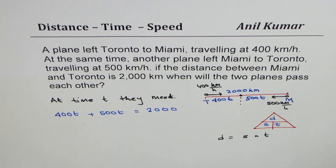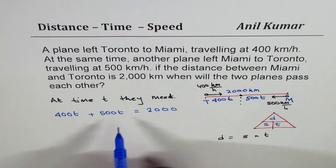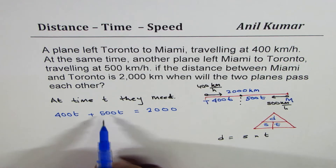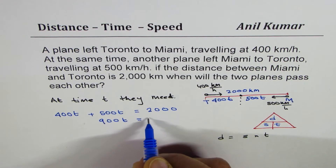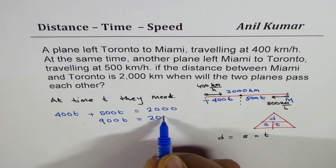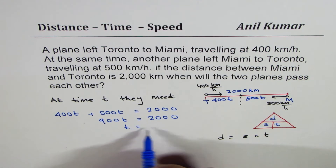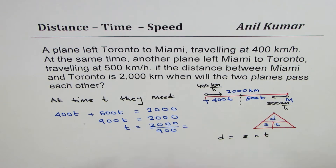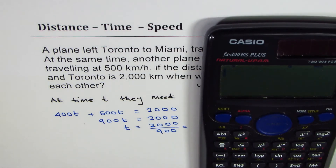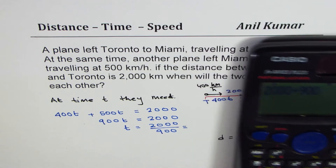This equation is a single variable and we can easily solve it. 400t plus 500t is 900t, which should be equal to 2000. T will be 2000 divided by 900. Let's take the calculator and do the calculation — 2000 divided by 900 gives us 20 over 9.